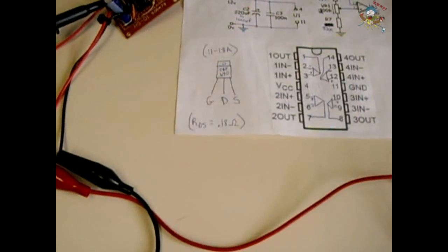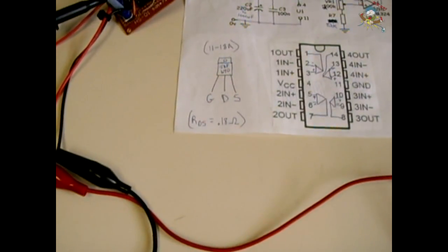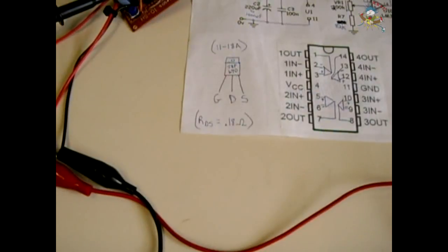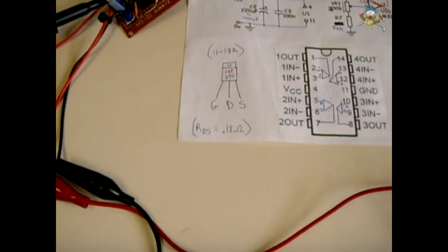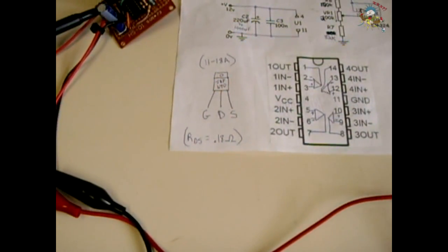The IRFZ44N is a low one. The IRF3205, that's like 100 amps. So there are plenty of different MOSFETs that you can choose when you put together this circuit.